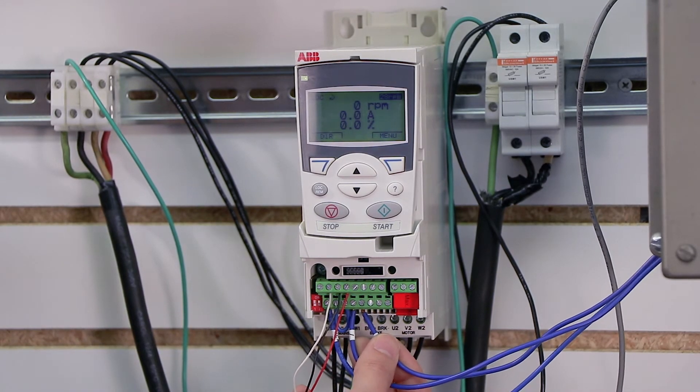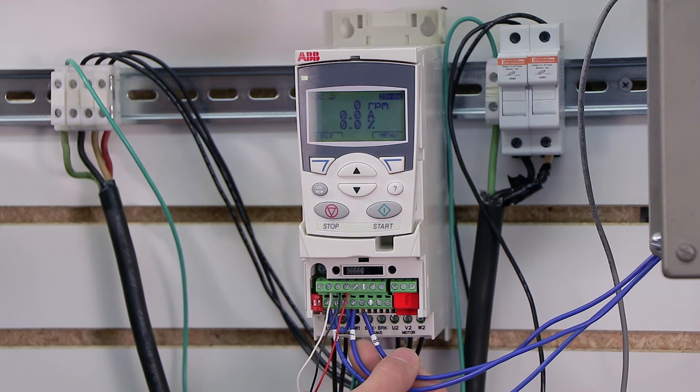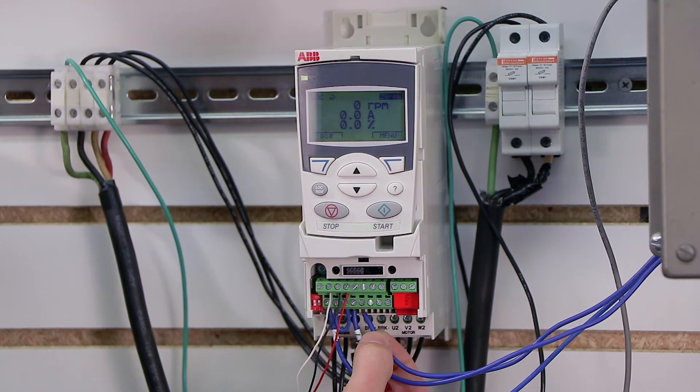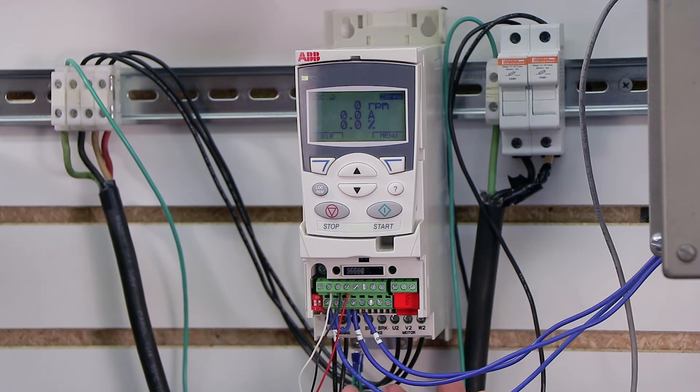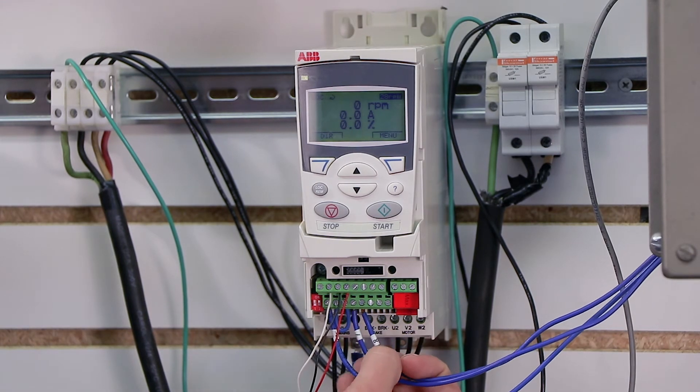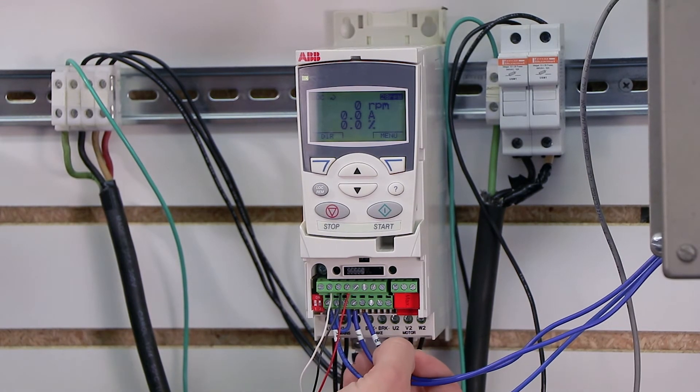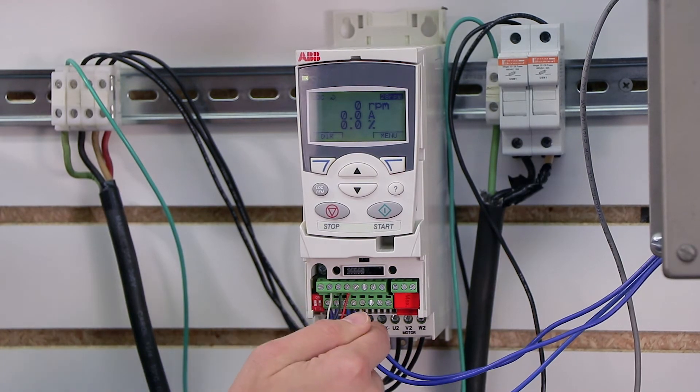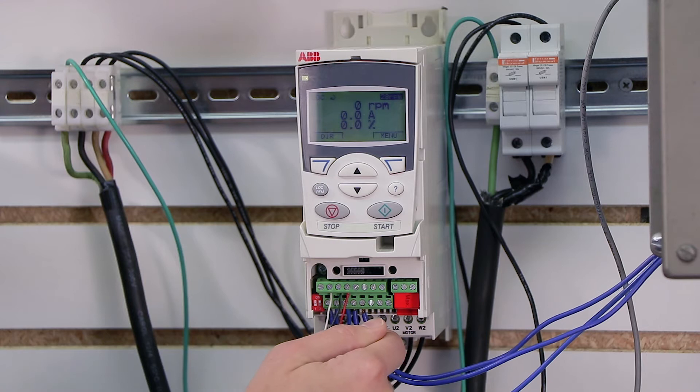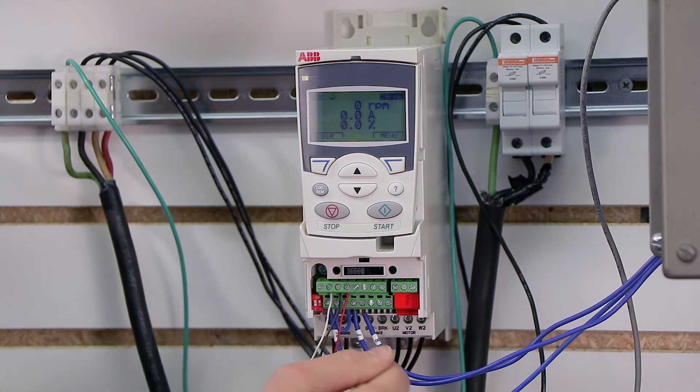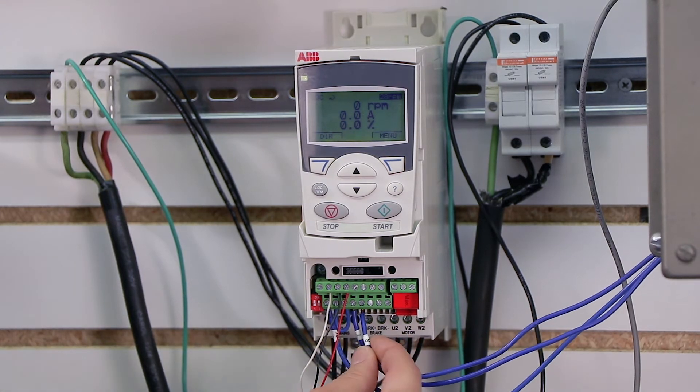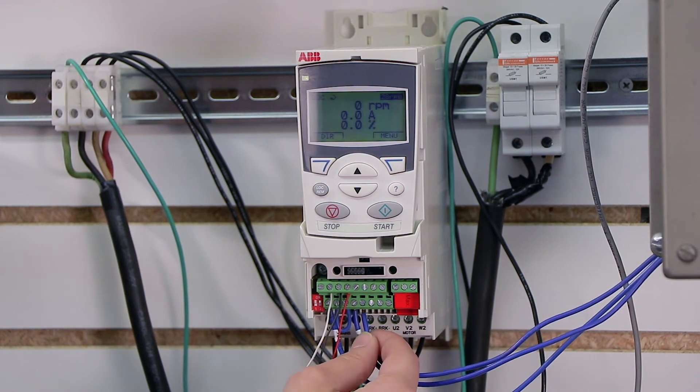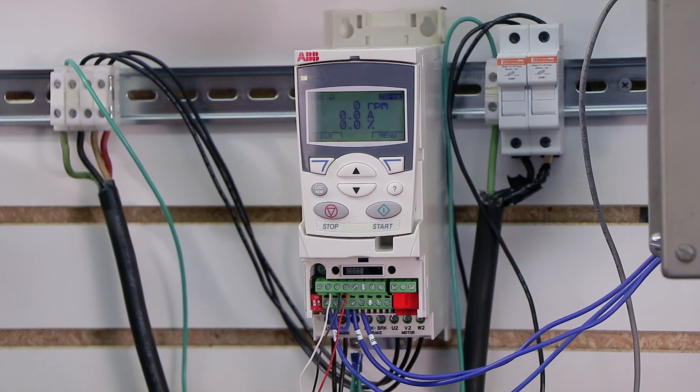Terminal 13 is our stop. Now the way stop buttons work is that they're normally closed. The reason being is if for some reason the button fails or falls apart behind it, the drive will always be stopped. So electricity is always flowing to terminal 13, or our stop command, unless you press the button. When you press the button, you actually interrupt the electrical flow and stop the drive. So the drive always needs some kind of input on 13 in order to run in this configuration.